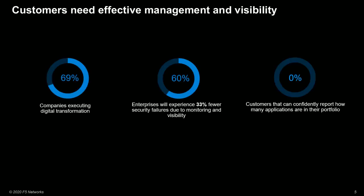It is clear that customers need effective management, which can be achieved by getting visibility. The increasing lack of visibility is not stopping innovation within companies — they will continue their digital transformation journey because if they want to survive, they need to outperform their competition, or at least stay in the race. 69% of all these companies indicate that they are executing digital transformation.